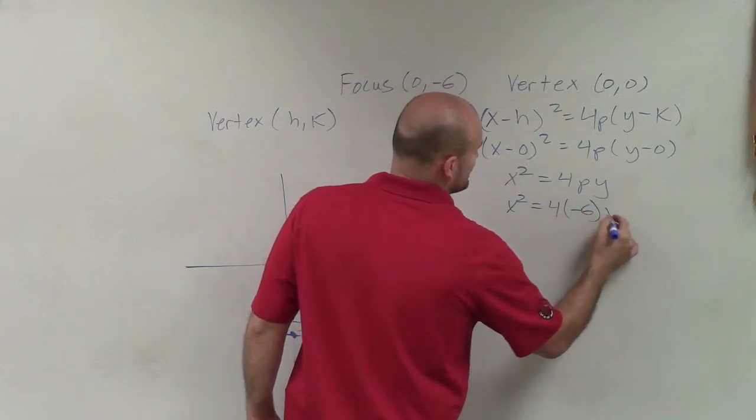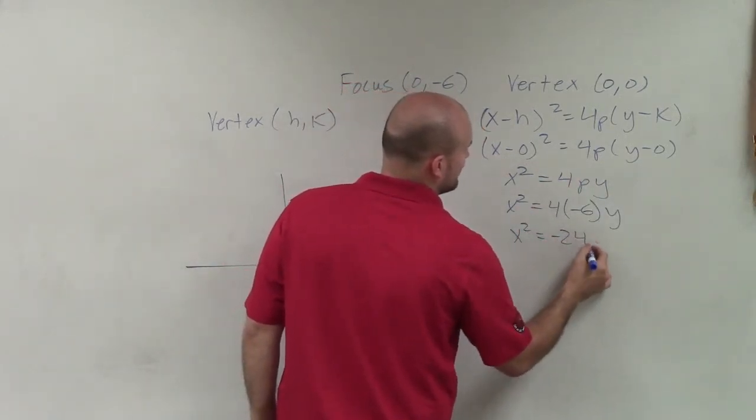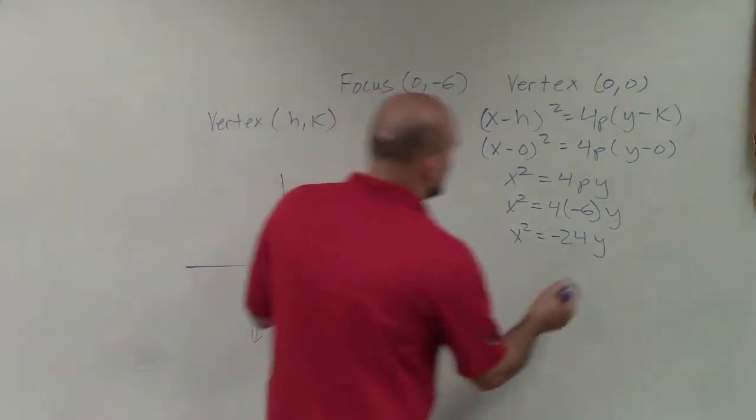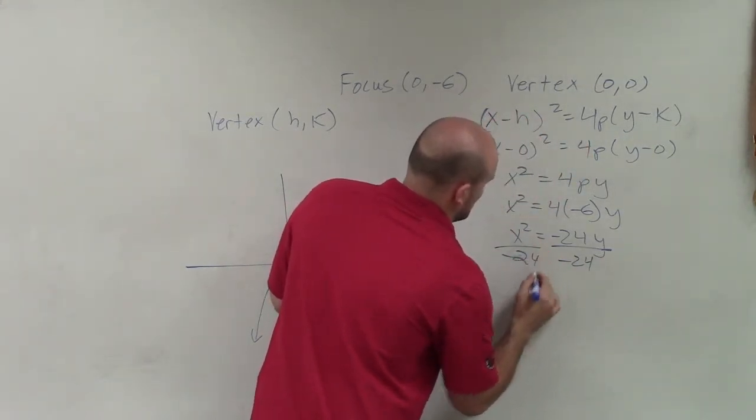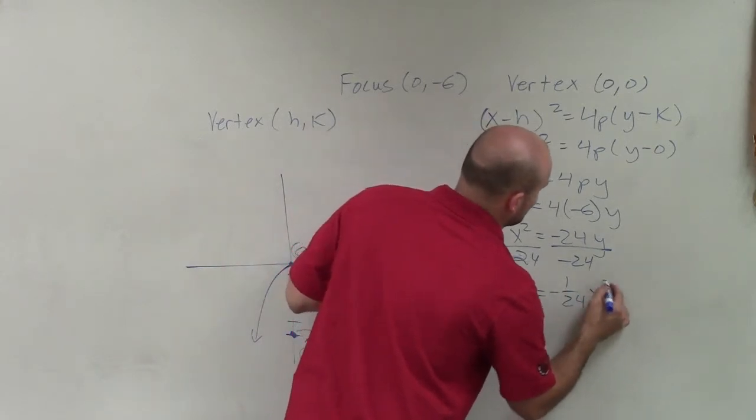Multiply those: x² = -24y. Now to solve for my equation, I'll solve for y. Dividing by -24: y = -1/24 x².